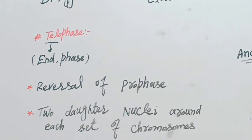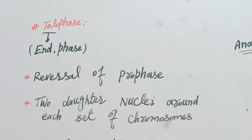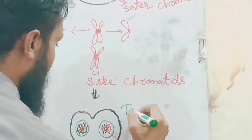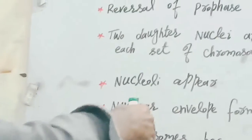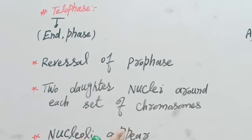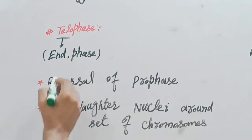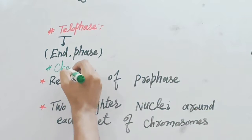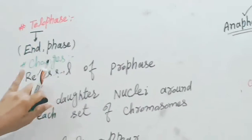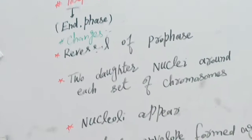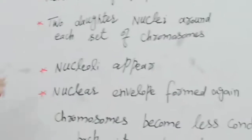These are the following changes in the Tilo phase. Tilo means end, because this is the last phase of mitosis, so we call it the Tilo phase. The first change in the Tilo phase is the reversal of our phase — it means this phase is opposite to the Pilo phase.